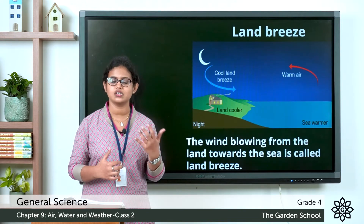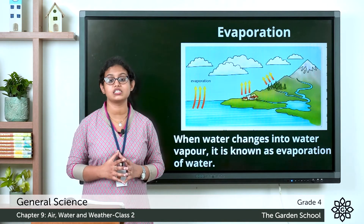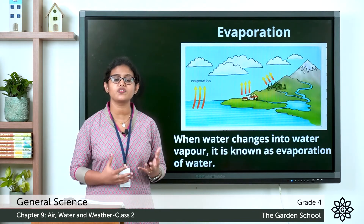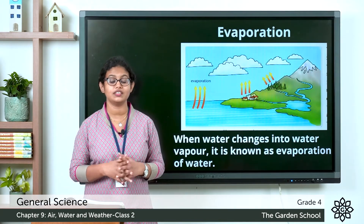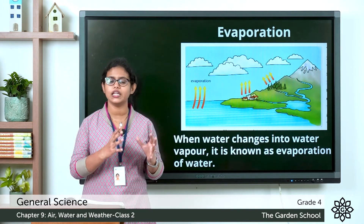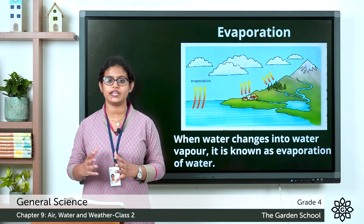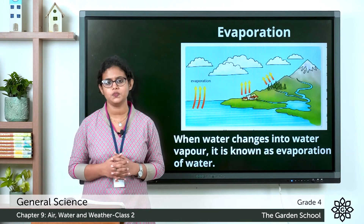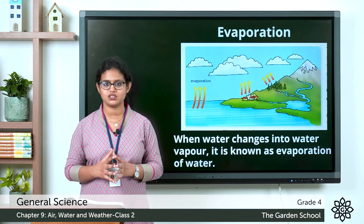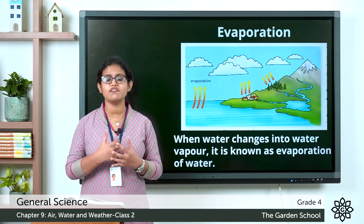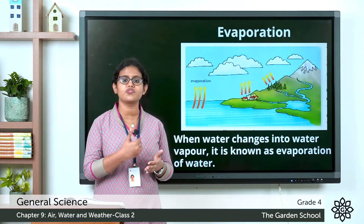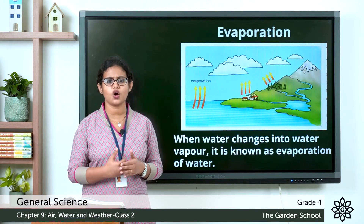I hope you understood about sea breeze and land breeze. The next topic is evaporation. Evaporation means the process of converting water into water vapor. When you heat water, it changes into water vapor — water in the liquid state changes into the gaseous state. For example, after we wash our clothes and dry them, the water gets evaporated. The water gets evaporated faster during a sunny or windy day. So evaporation is the process of converting water into water vapor.